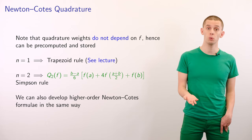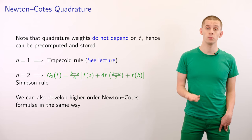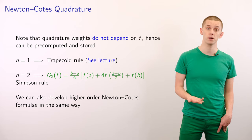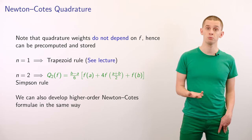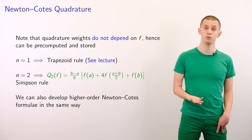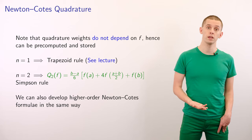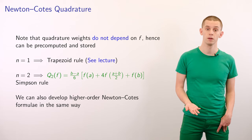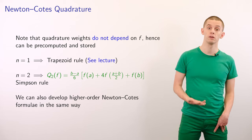We saw that for the case of n equals 1, the Newton-Cotes quadrature formula was equivalent to the trapezoid rule. If we look at n equals 2, then we end up with the following formula: qn of f equals b minus a divided by 6 times f of a plus 4 times f of a plus b divided by 2 plus f of b. This is actually another well-known formula, referred to as the Simpson rule. We can also develop Newton-Cotes formulas for higher values of n.